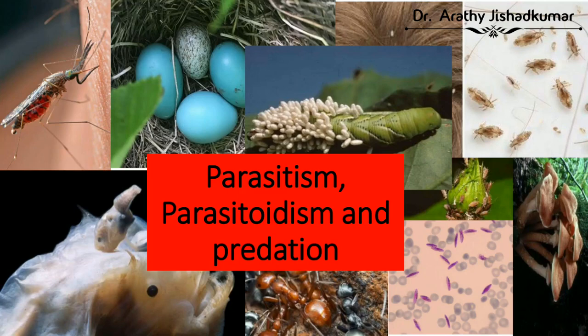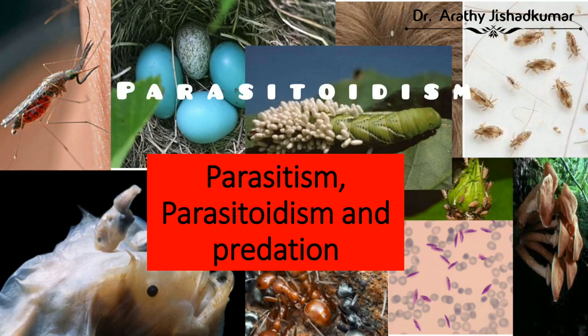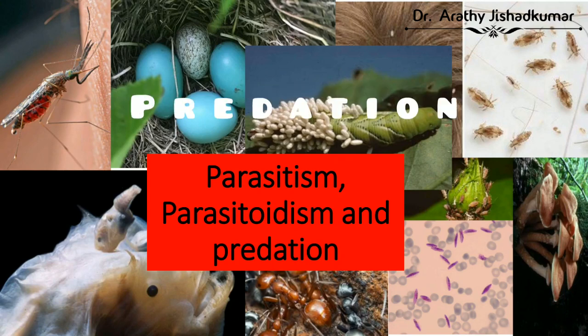In an ecosystem, interaction between two different organisms is a common phenomenon. Not a single organism can exist without having an association with another organism. If we observe, we will be able to see different kinds of interactions, and all these interactions make the ecosystem evolve and are vital to shape the ecological communities. My name is Dr. Aarti Jishat Kumar, and let's get started. In evolutionary ecology, the study of common feeding behaviors such as parasitism, parasitoidism, and predation have special importance.